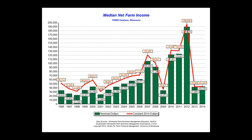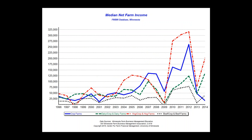But look at the last two years — we've just crashed in terms of farm profitability. The next slide breaks that out by type of farm. The blue line is crop farms, red is hog farms, green is dairy, and black is beef. Those are the primary enterprises, though farms are mixed.